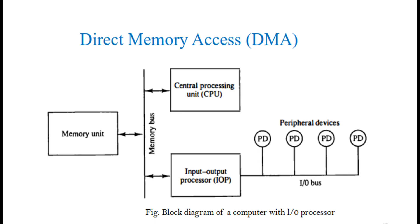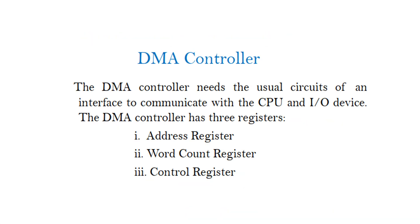Block Diagram of a Computer with I/O Processor: The DMA controller needs the usual circuits of an interface to communicate with the CPU and I/O device. The DMA controller has three registers: (1) Address Register, (2) Word Count Register, and (3) Control Register.